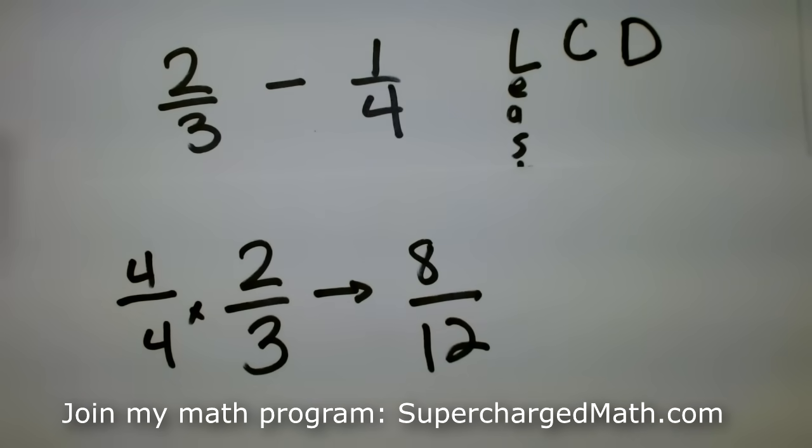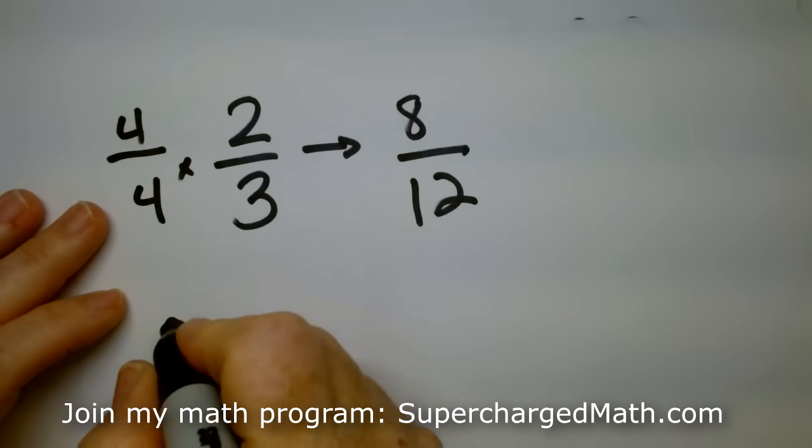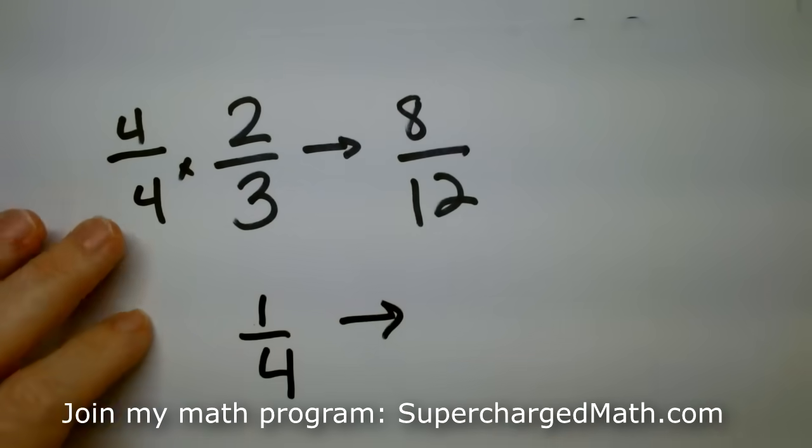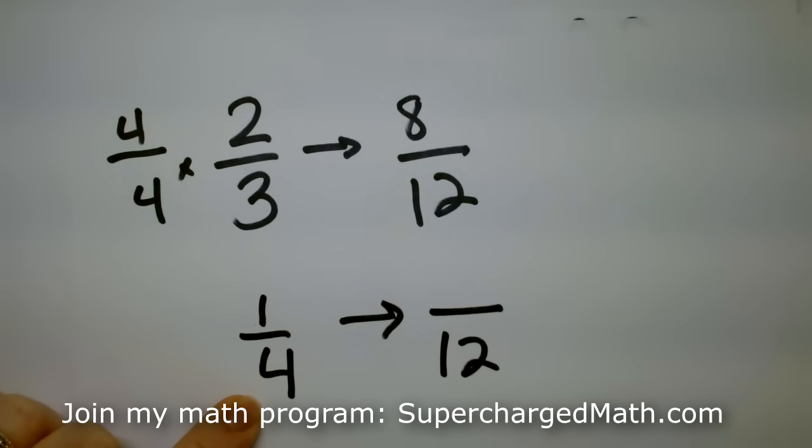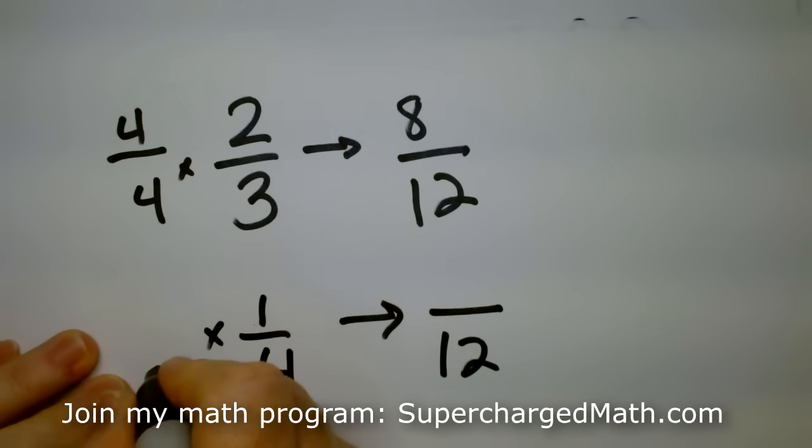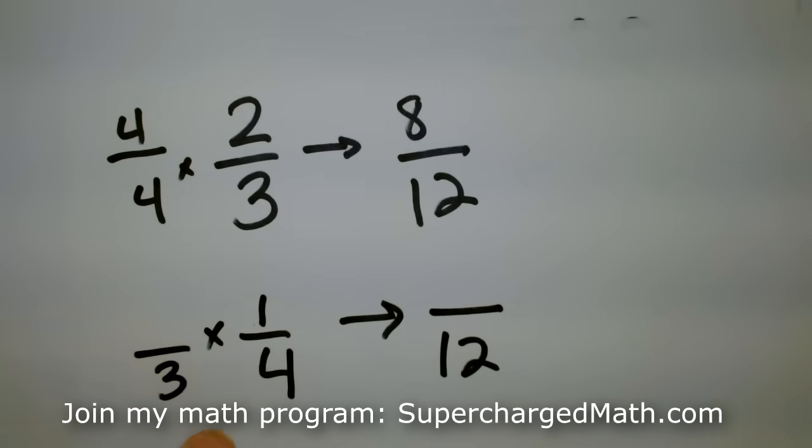Let's do the same thing for the quarter. So we'll move this up. So one-quarter, what do I have to multiply by to get the bottom equal to twelve? Is it four? No, that'd be too big, right? What do I need to multiply by? That's right, three. Now, can I just do the bottom, or do I have to do the top, too? Yeah, I have to do the top.